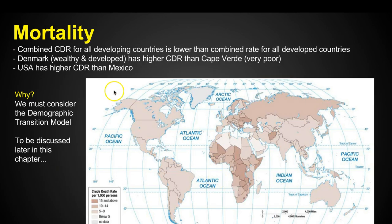Mortality: the combined death rate for all developing countries is lower than the combined rate for all developed countries. It's interesting that the mortality rate — the death rate for the developing countries — is lower than the combined rate for all developed countries.